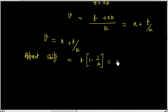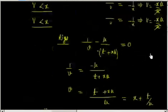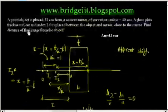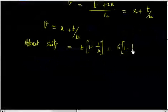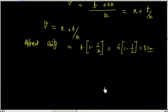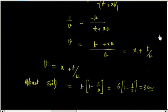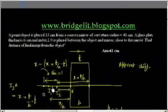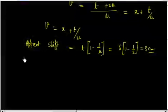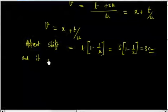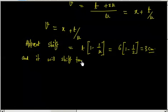So the apparent shift equals T times (1 minus 1/mu). This formula is the same as derived in textbooks, but it is good to derive it from scratch. For this problem, t equals 6 centimeters and refractive index is 2, so apparent shift is 6 times (1 minus 1/2) equals 3 centimeters. The image shifts towards the slab side. Also, this shift is independent of x — wherever you place the object, the shift is the same.